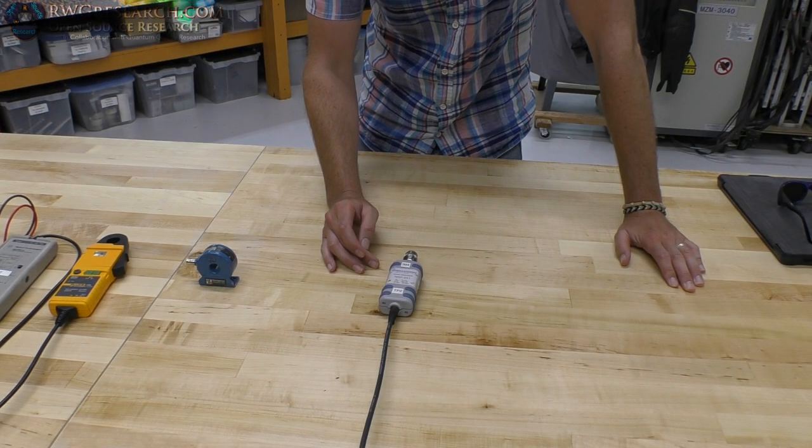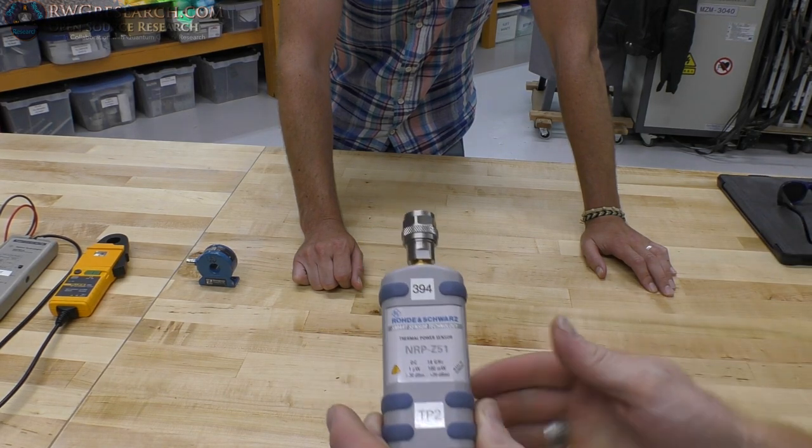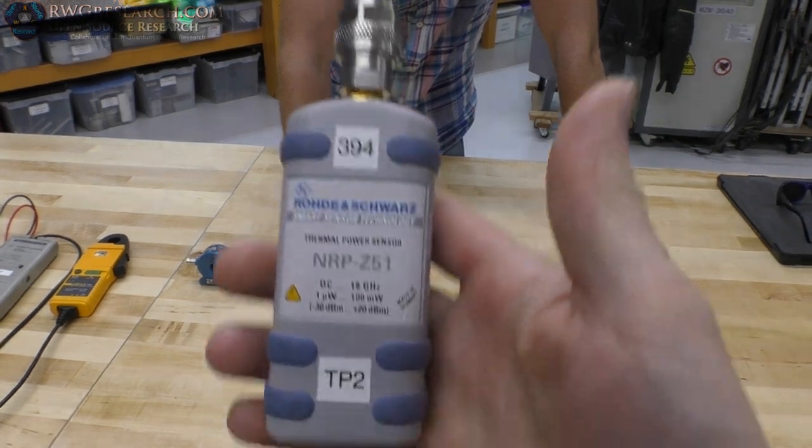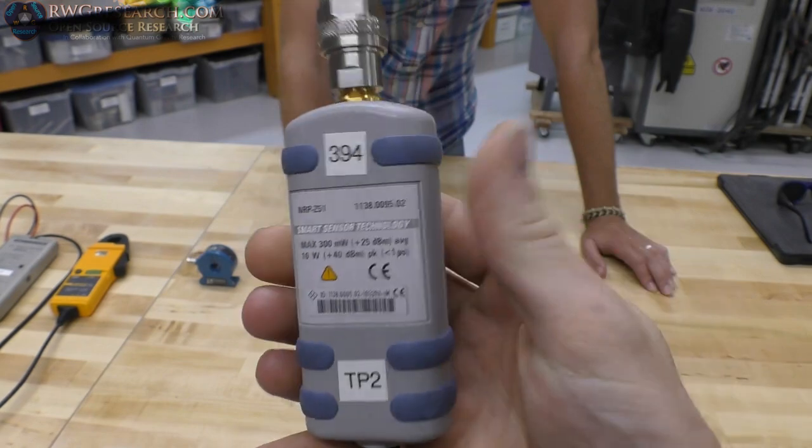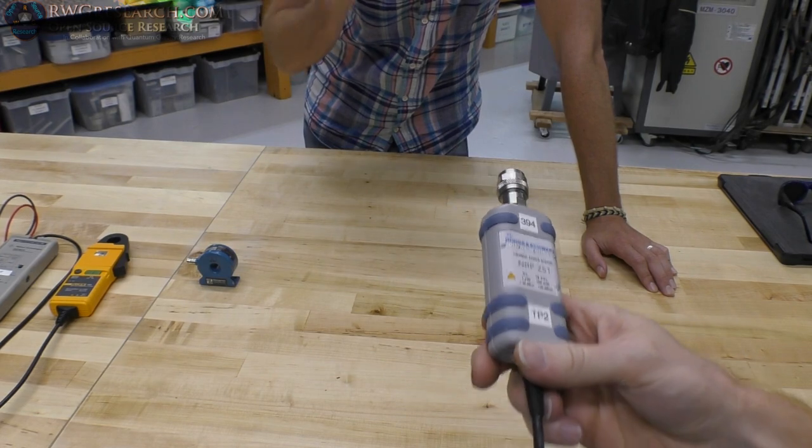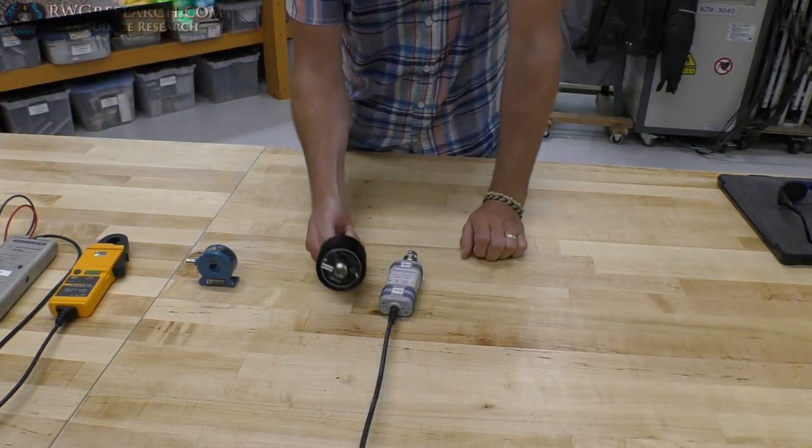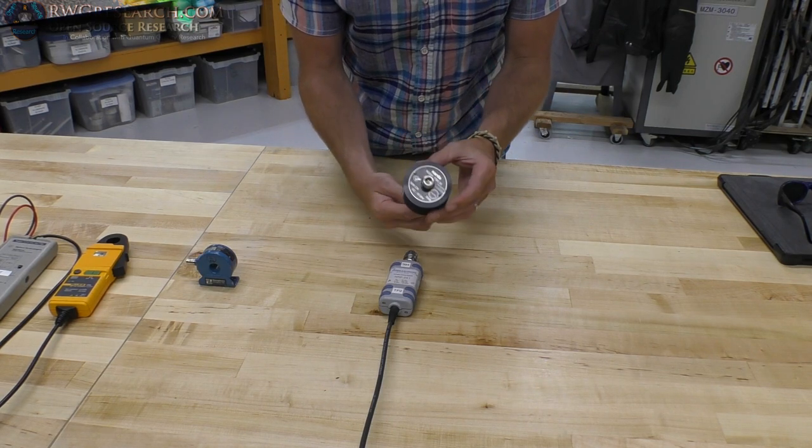So this is a thermal power probe. This is made by Rhoda and Schwartz, and it's the NRP-Z51. This will do DC to 18 gigahertz frequency, and in power levels, it will go up to 100 milliwatts, which is not that high in power. But what you can do is you can use it in combination with an attenuator.